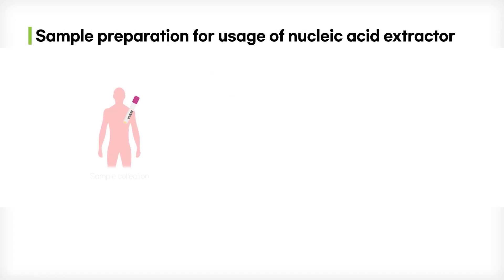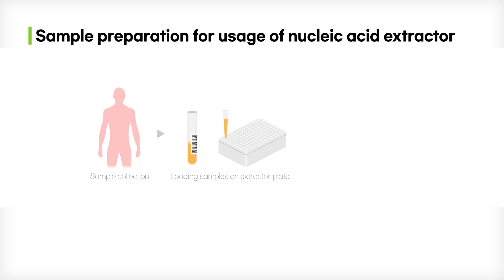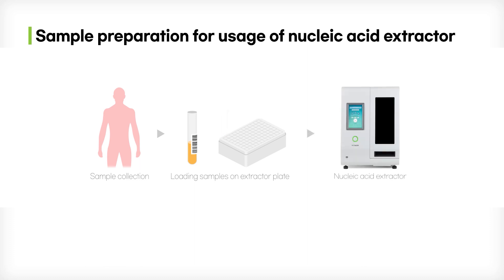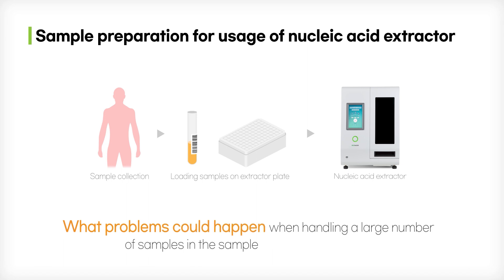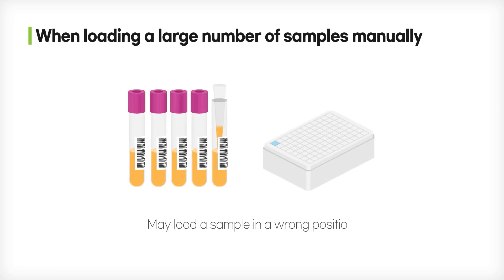Sample preparation for nucleic acid extraction is the process that collects samples and loads them onto the extractor plates. During the process of handling large samples, what problems could occur — first, during the loading of a large number of samples manually, human error could occur, such as samples not being loaded into the correct location.